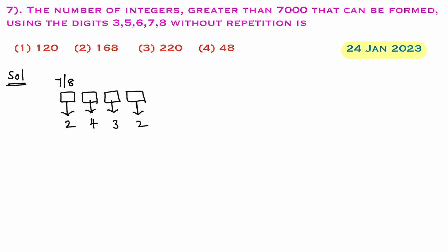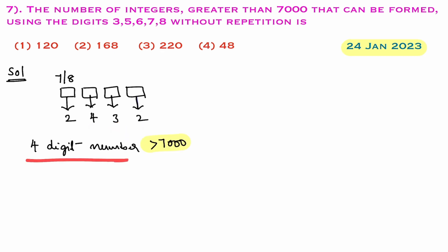By fundamental principle of multiplication, the total number of four-digit numbers that can be formed is 2 into 4, 8; 8 into 3, 24; 24 into 2 is 48. Total number of four-digit numbers which are greater than 7000 equal to 48.